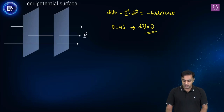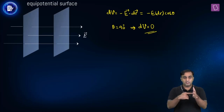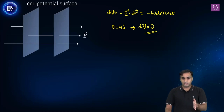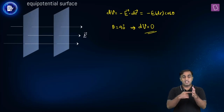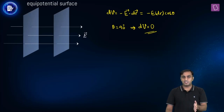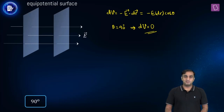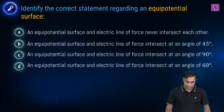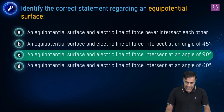We have concluded that between the electric field and the equipotential surface — in other words, between the line of force and the equipotential surface — the angle is 90 degrees. Looking at the options, the correct one is C.